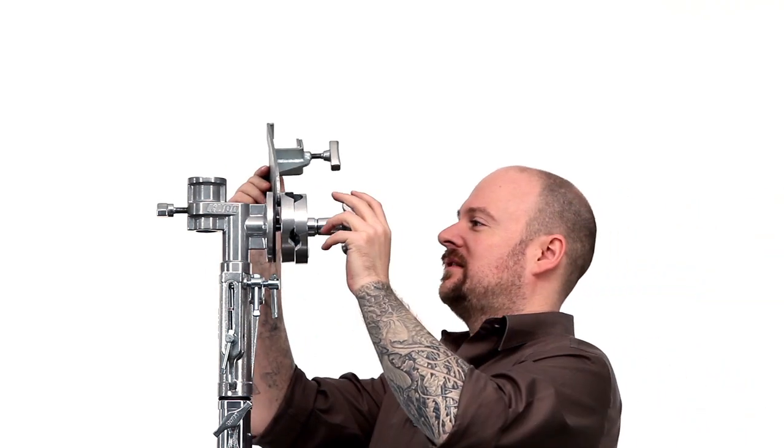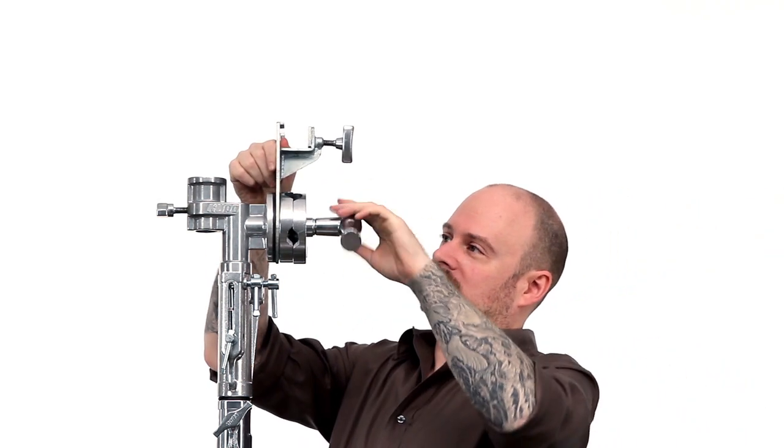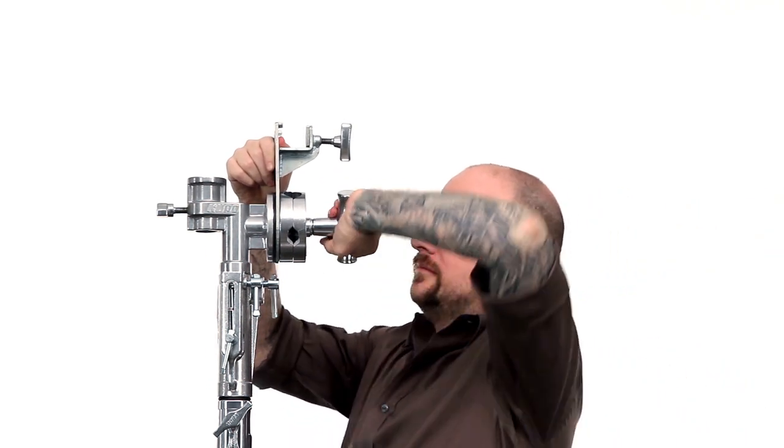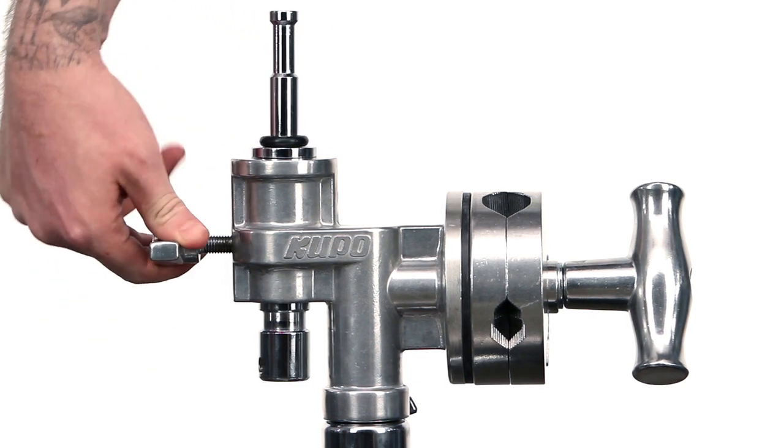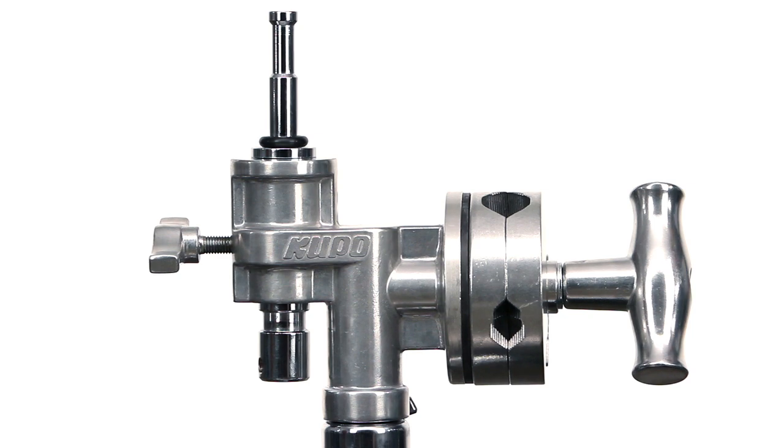These large grip heads are commonly used to support overhead frames due to their increased strength. The junior receiver gives you the option of mounting any junior 1 1⁄8 accessory.